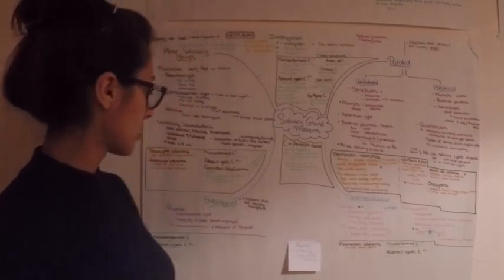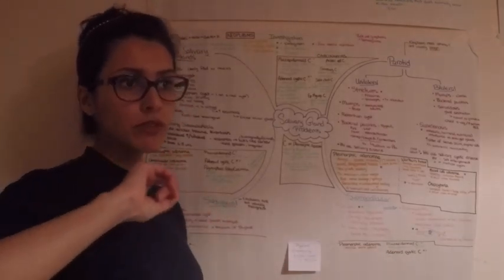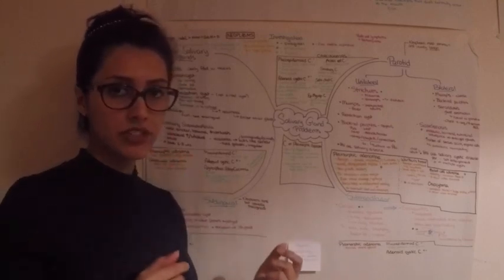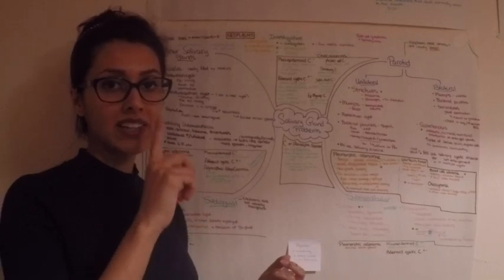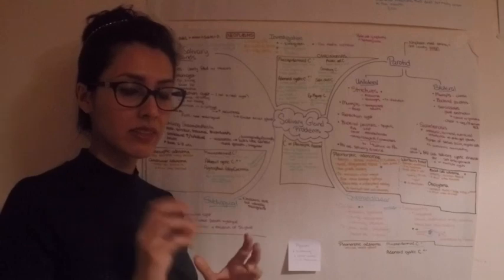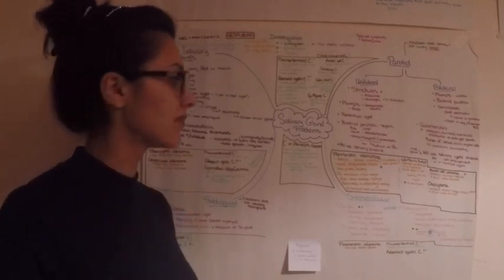Pleomorphic adenomas can present in the submandibular, can also present in the minor salivary gland. So if you found a big lump of myxoid tissue in the palate, then it's probably a pleomorphic adenoma of the minor salivary gland. And I think the most typical presentation of those ones are a junction of the hard and soft palate.